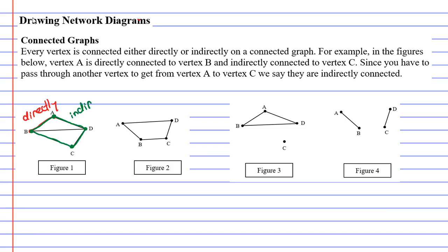So we will write that they are indirectly connected. Figures 1 and 2 has every vertex connected either directly or indirectly. We call these connected graphs.